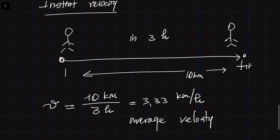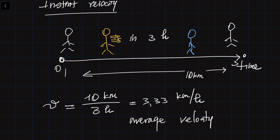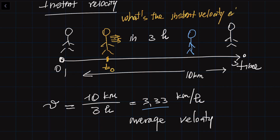The problem is this is the average velocity. Let's say this is the time axis: you started from zero and ended at 3 hours. At some stages you might walk really fast, and at some points you would just stay — perhaps drinking coffee. So the 3.33 doesn't really reflect your velocity at a given point. Your velocity sometimes might be five or six; at some points it would be simply zero. But on average it is 3.33. Now I would like to find what is your velocity exactly at point T zero — the instant velocity.